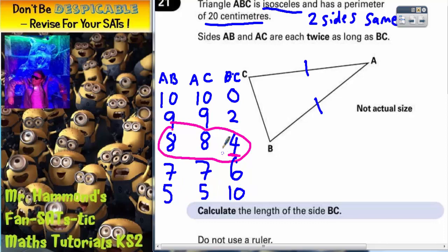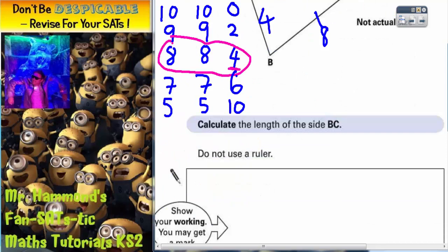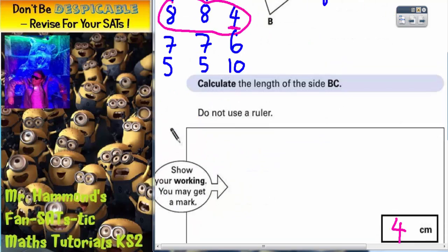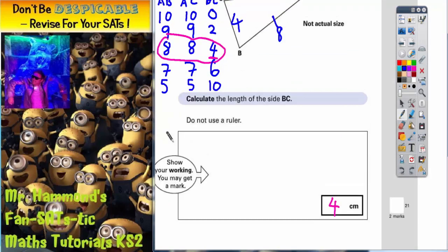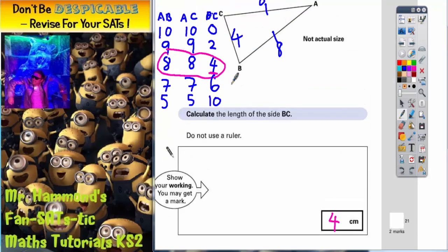So the only combination that will work is 8, 8, and 4. So the side that we're asked for is the 4. And all you would have to do would be to write this level of working out into the box, to show that you've tried all the combinations and you've found one that works.